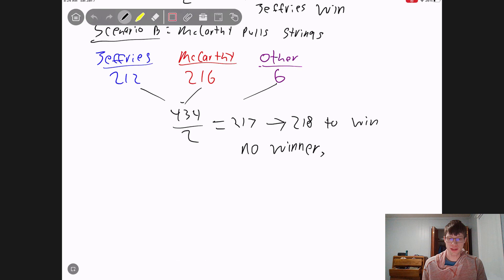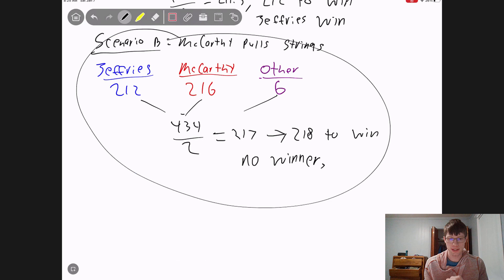The scenario that ended up getting McCarthy to win was very similar to this scenario that I had right here. As I had stated before, there were six people who said that they would never vote for Kevin McCarthy, and that is exactly what ended up happening.